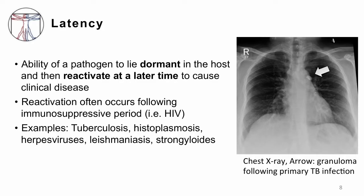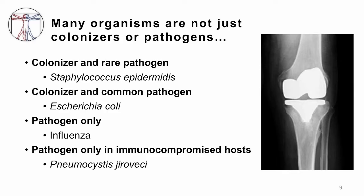Certain organisms are colonizers, certain organisms are pathogens, and they don't necessarily need to be just one or the other. There are certain organisms that are predominantly colonizers and rarely become pathogens — for example, Staphylococcus epidermidis. Not surprisingly, this is a form of staph that lives on the skin, the epidermis, and it predominantly is not a cause of disease. However, in this x-ray is a person who has had a knee replacement. When you put a foreign body or an artificial knee in place and Staph epidermidis gets in, it can cling and form biofilms on the prosthetic material and actually cause infection. But for the most part, it really doesn't.